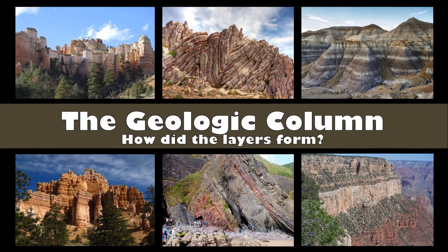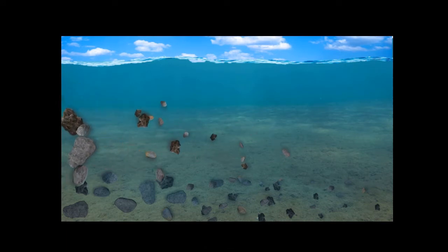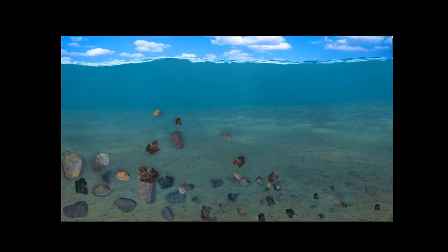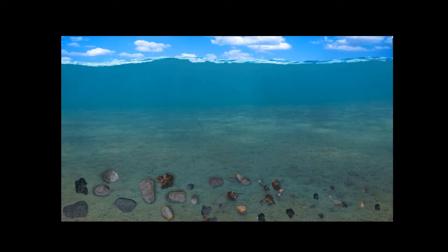The Geologic Column. How did the layers form? You may recall that rock strata are laid down as different sized sediments are deposited — largest sediments first, and smallest sediments last. During a process known as lithification, these layers of sediment become sedimentary rock layers, or strata.